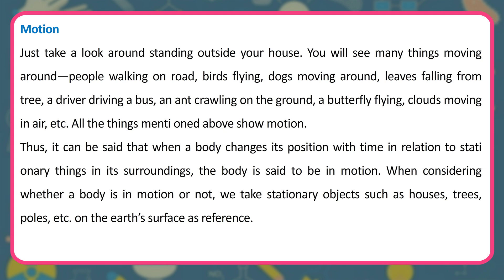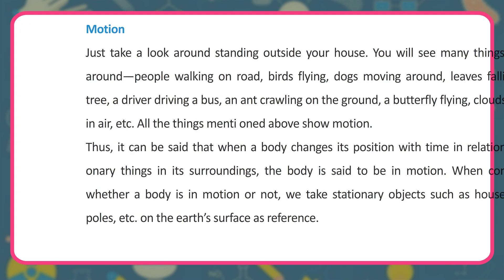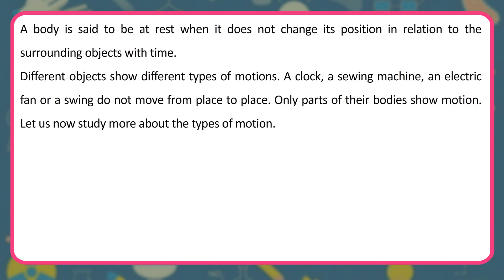When a body changes its position with time in relation to stationary things in its surroundings, the body is said to be in motion. When considering whether a body is in motion or not, we take stationary objects such as houses, trees, poles, etc. on the earth's surface as reference. A body is said to be at rest when it does not change its position in relation to the surrounding objects with time. Different objects show different types of motions.